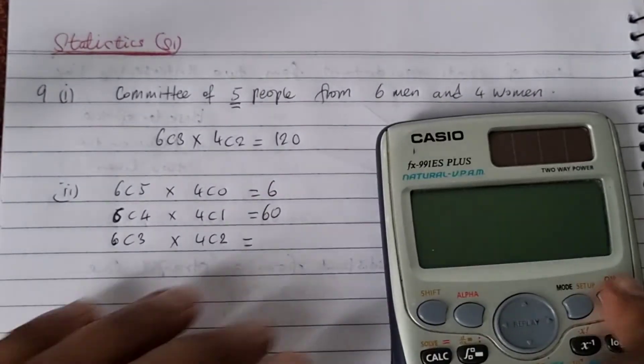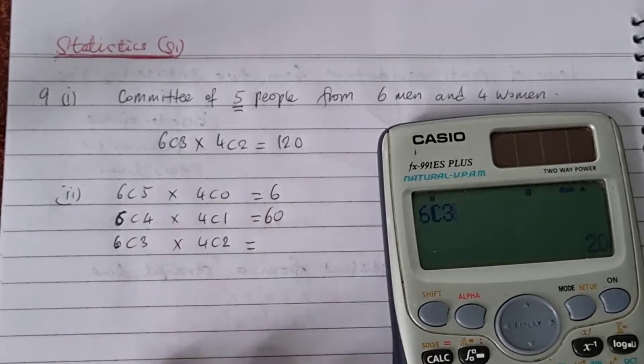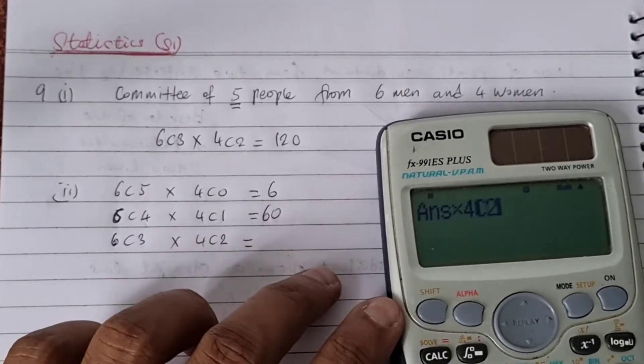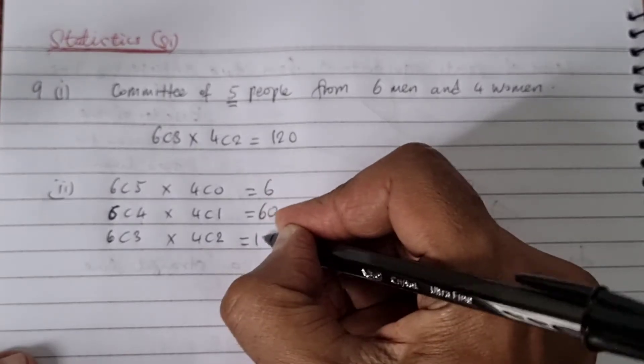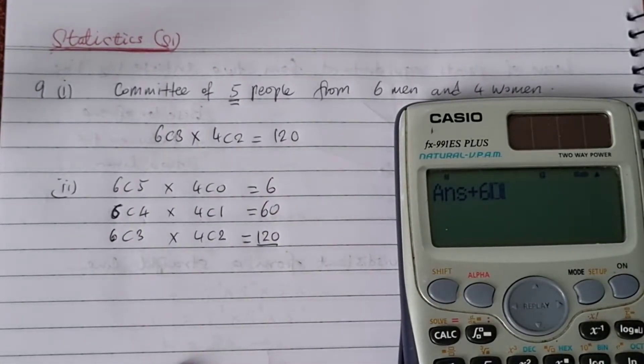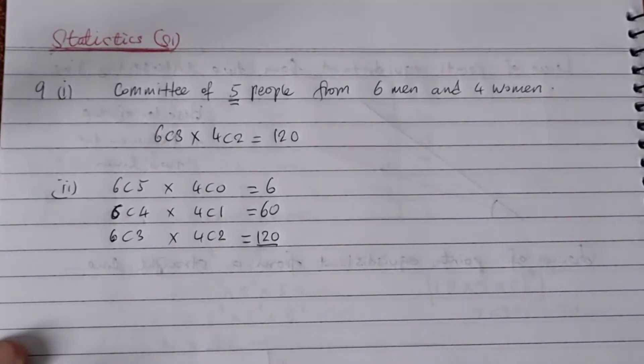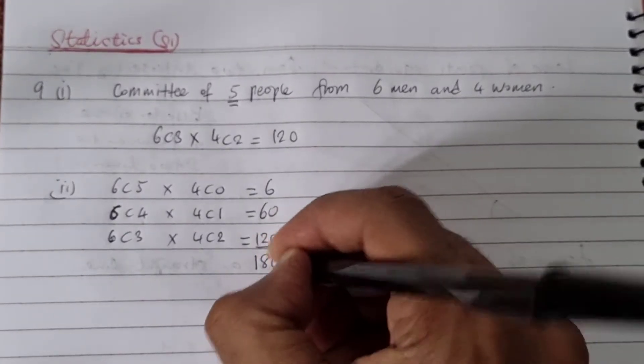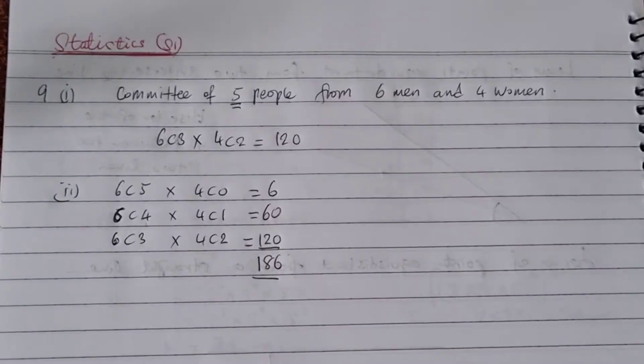And then we've got six choose three times four choose two, and we've got 120. So we're going to have to add all these up. 186. That's our answer to the second part.